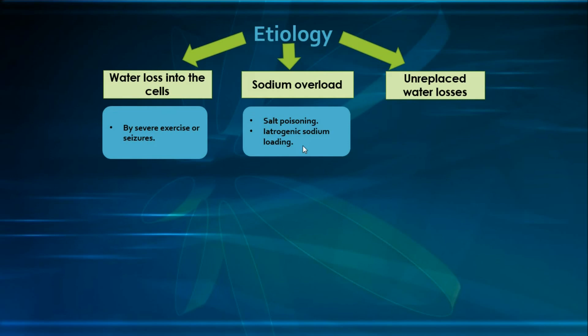Loop diuretics can also cause hypotonic fluid loss because they cause more free water loss relative to solutes. So if any of these conditions are present and you replace the patient with isotonic saline, there will be a sodium overload, because the isotonic saline is considered hyperosmolar relative to the fluid that has been lost.